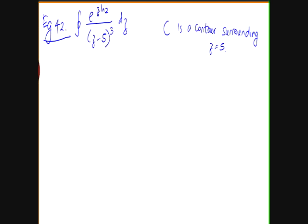Example 42. Here we have to find the integral of e to z ln 2 over z minus 5 cubed dz, and all we are told here is that c is a contour around z equals 5.